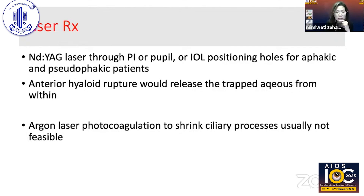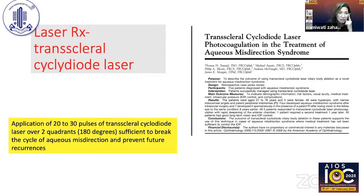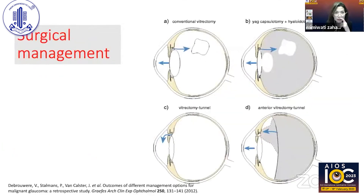Laser photocoagulation can be done to shrink the ciliary processes, but they are not easily visualized and you need a very large PI to see them. Transscleral cyclodiode laser is usually helpful. One case series advocates application of 20 to 30 pulses over two quadrants, which is found sufficient to break the cycle of misdirection and prevent future recurrences.